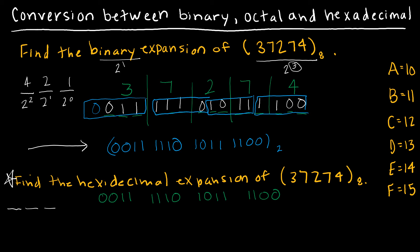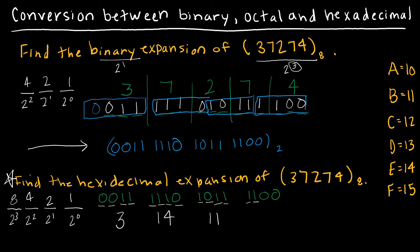For hexadecimal, the four places are 2 to the 0 (1), 2 to the 1st (2), 2 to the 2nd (4), 2 to the 3rd (8). The first group: 0 eights, 0 fours, 1 two, 1 one gives 3. The second group: 1 eight plus 1 four is 12, plus 1 two is 14. The third group: 1 eight plus 1 two is 10, plus 1 one is 11. The fourth group: 8 plus 4 is 12. So my hexadecimal solution is 3, E (14), B (11), C (12), base 16.